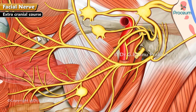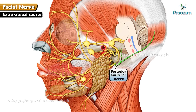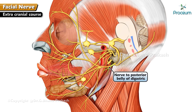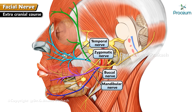Extracranial course: after exiting from the stylomastoid foramen, the facial nerve enters the parotid gland and divides into five terminal branches. Branches before entering the parotid gland include the posterior auricular nerve, which supplies the occipitalis and posterior auricularis muscles of the scalp, and the nerve to the posterior belly of digastric. The five terminal branches are: temporal, zygomatic, buccal, mandibular, and cervical nerve.